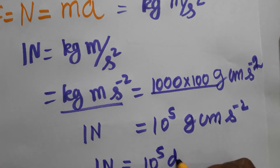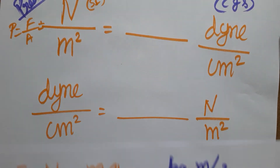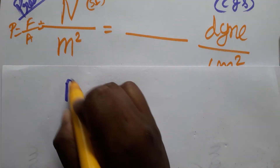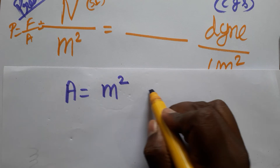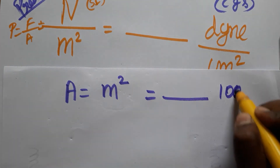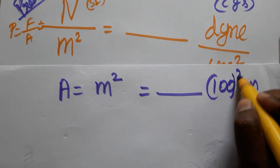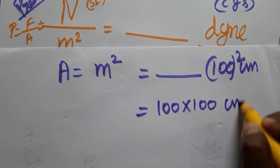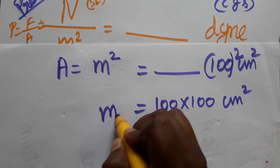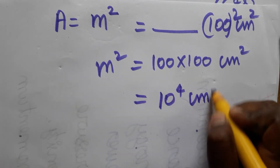Now the area unit: area is equal to length into breadth. Area unit is meter square. From meter to centimeter, one meter is 100 centimeters. So for meter square: 100 squared centimeter, that means 100 into 100 centimeter square. So one meter square equals 10⁴ centimeter square.